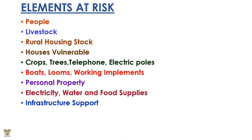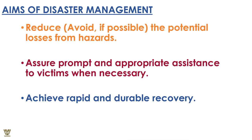Elements at risk include people, livelihood, lives, livestock, flora, fauna, rural housing stock, vulnerable crops, trees, telephone and electric poles, boats, looms, working implements, personal property, electricity, water, food supplies, and public infrastructure — essentially everything that is required for the sustainability of life and the functioning of a society.